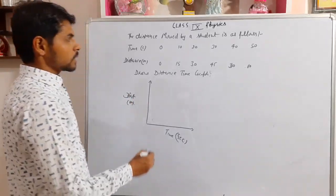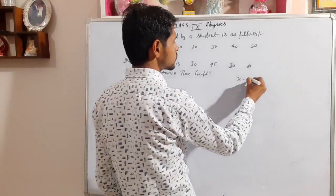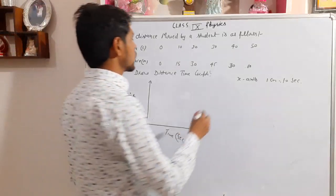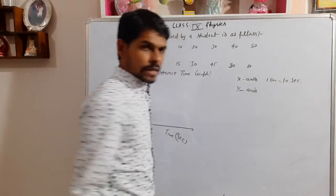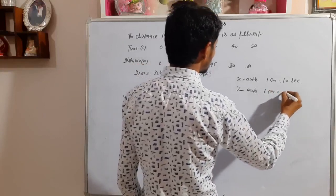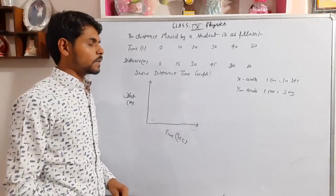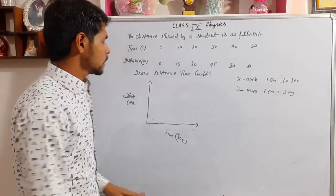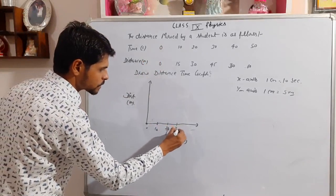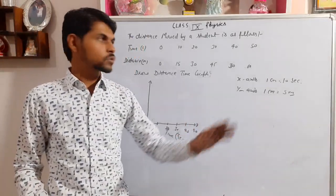First we calculate the scale. On the x-axis we are taking time, where 1 cm equals 10 seconds. On the y-axis, for distance, 1 cm equals 5 meters. So on the x-axis, starting from 0: 1 cm gives 10 seconds, then 20 seconds, 30 seconds, 40 seconds, and 50 seconds. The scale has been chosen.